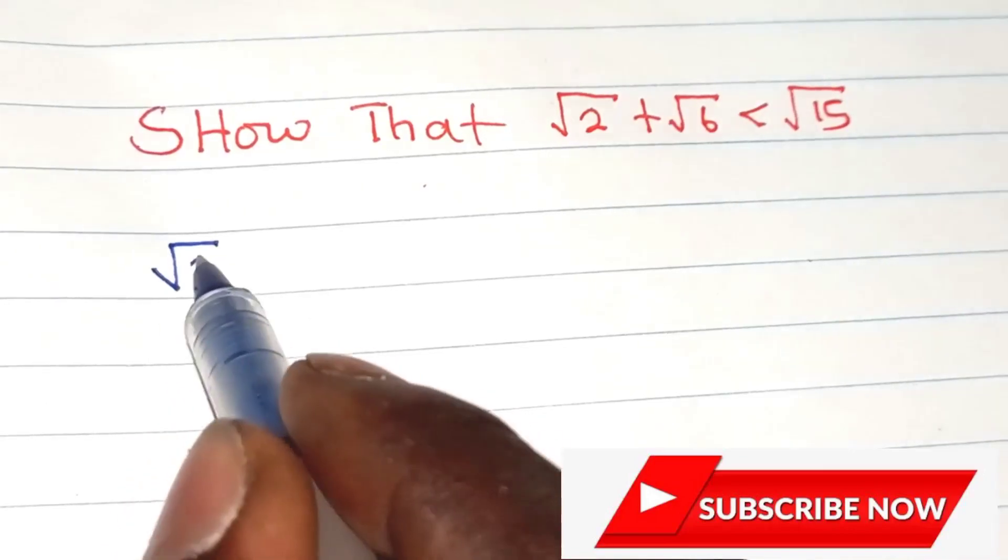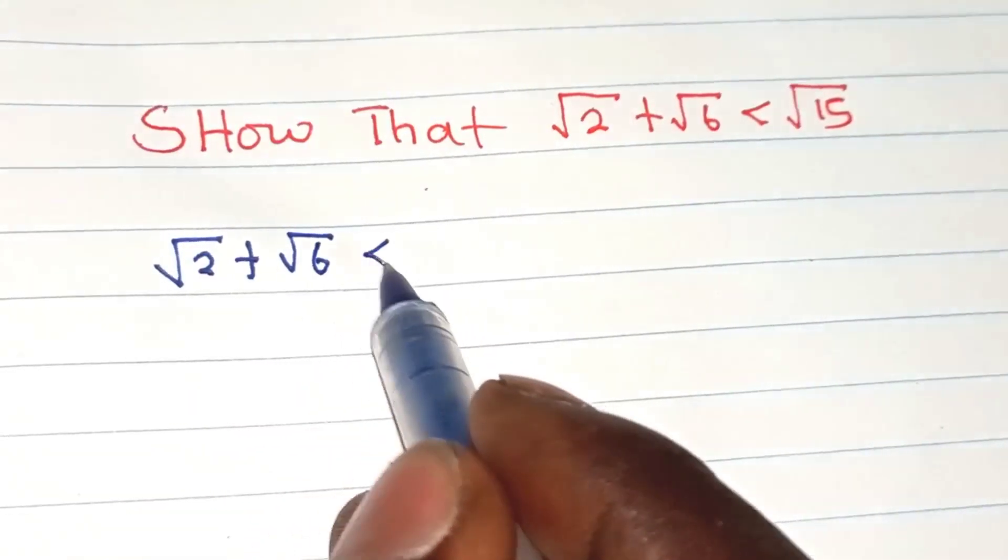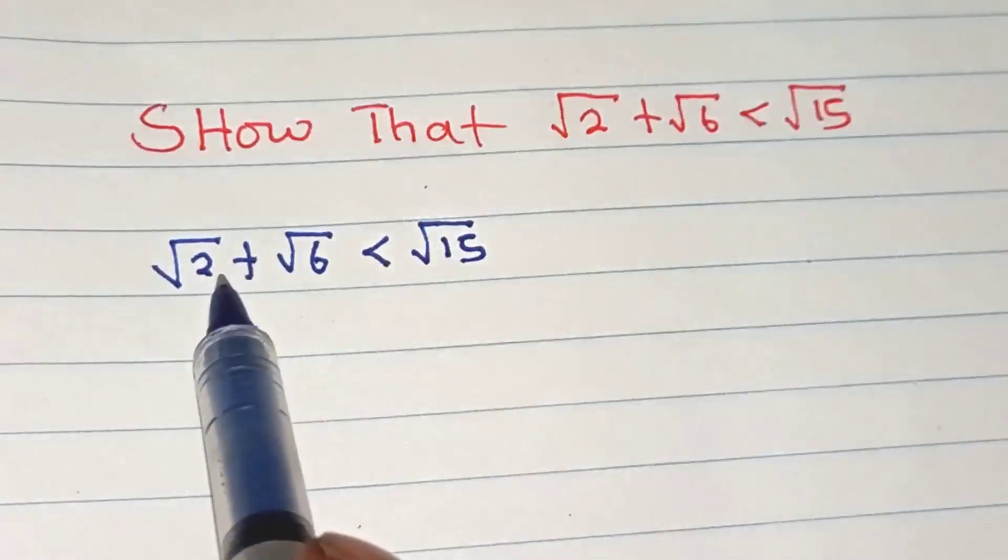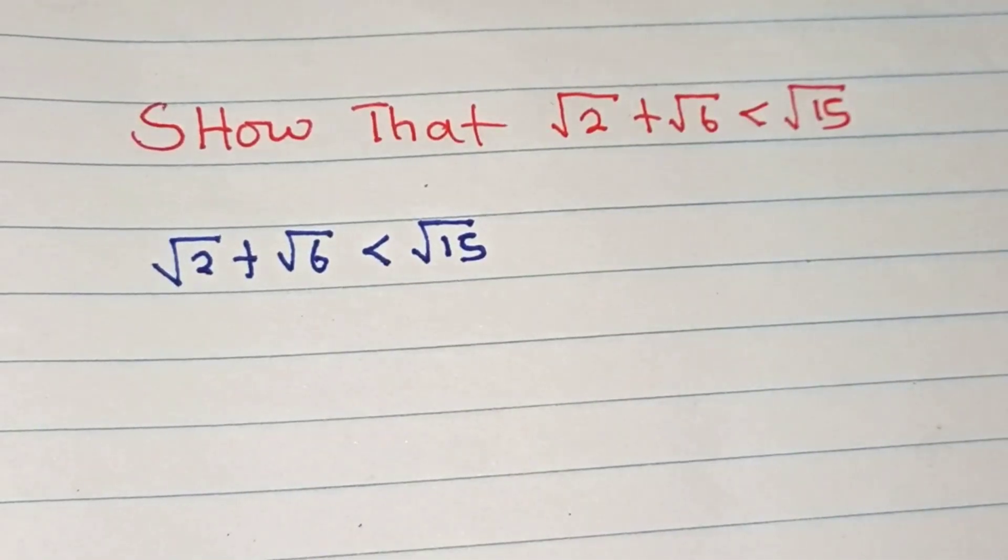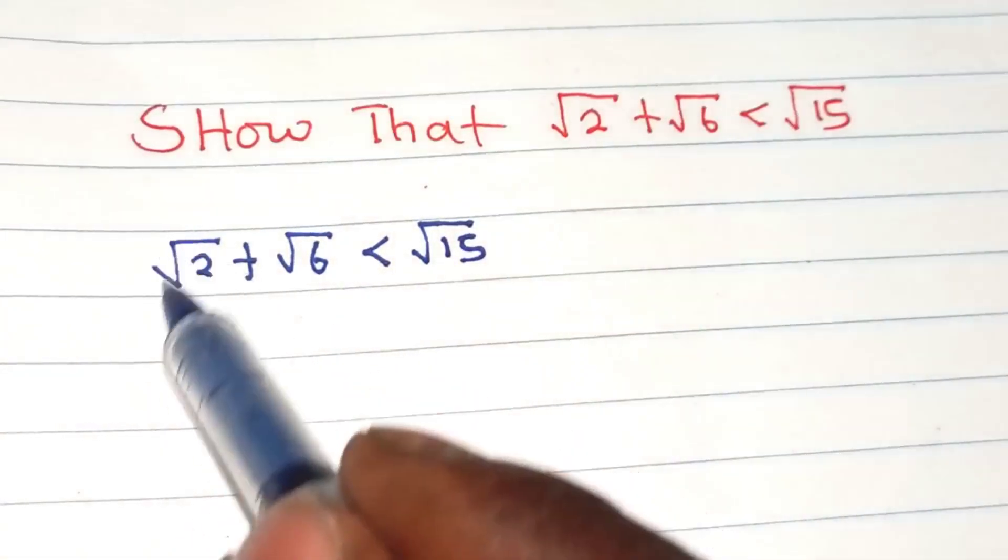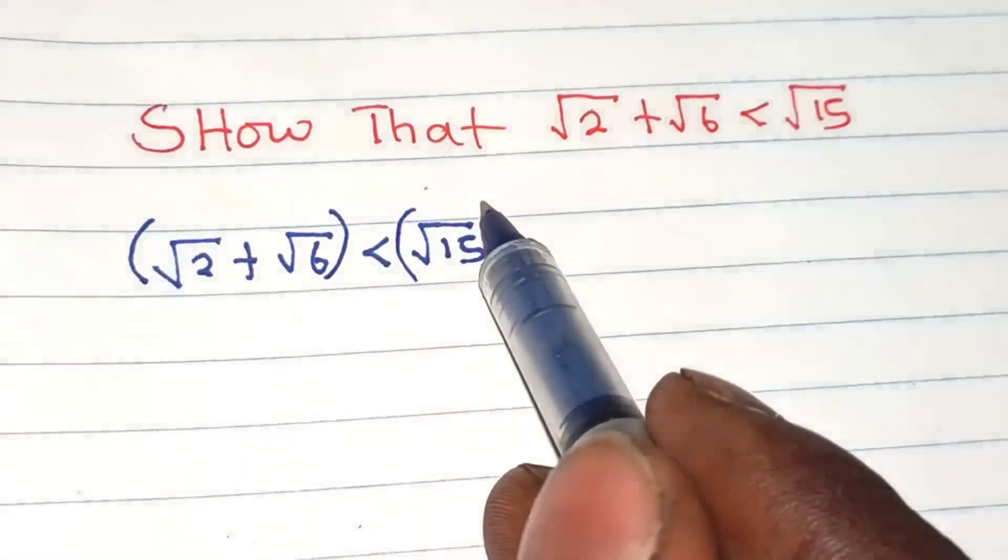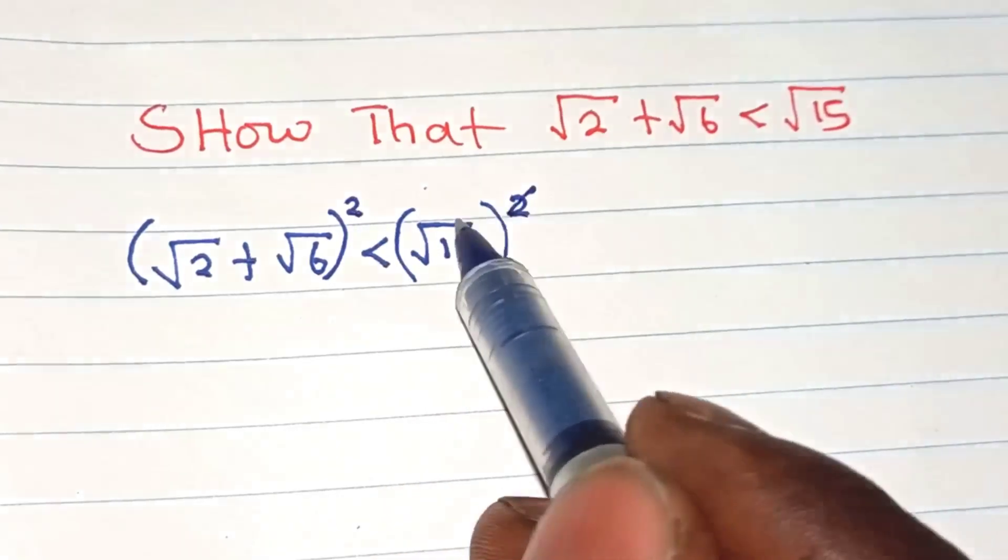Square root of 2 plus square root of 6 is less than square root of 15. We are going to show that the left hand side is less than the right hand side. From this, just take the square of both sides. This will cancel the square root.